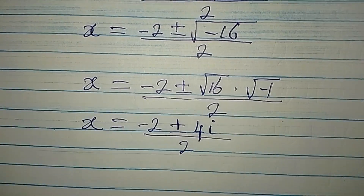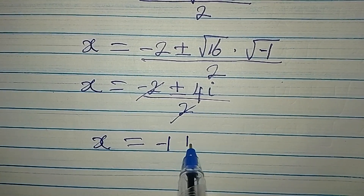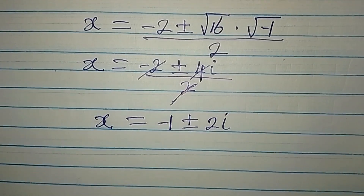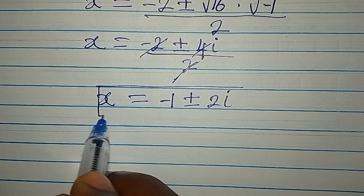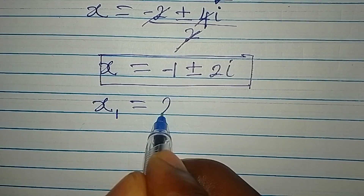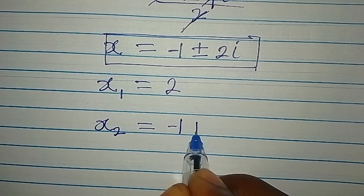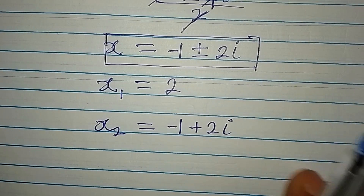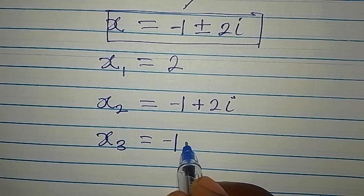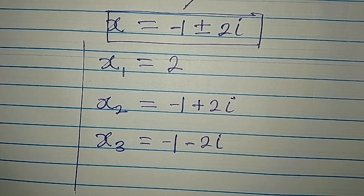Dividing by 2: x equals minus 2 over 2 plus or minus 4i over 2, which simplifies to x equals minus 1 plus or minus 2i. So we have three solutions in total. x₁ equals 2 (the real solution we found earlier). Taking the positive: x₂ equals minus 1 plus 2i. Taking the negative: x₃ equals minus 1 minus 2i. These right here are all the solutions to the equation.